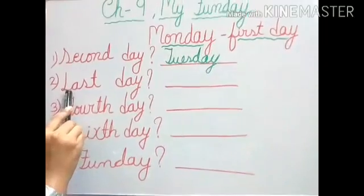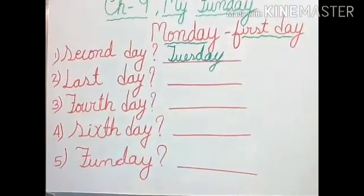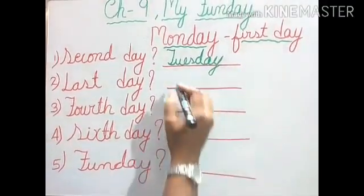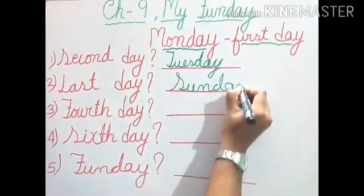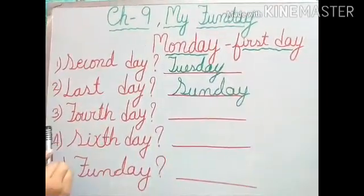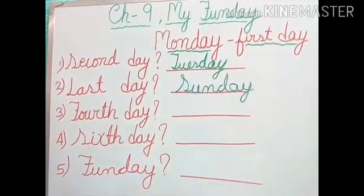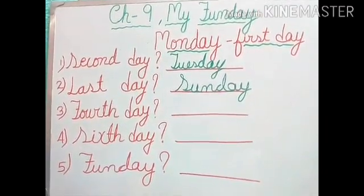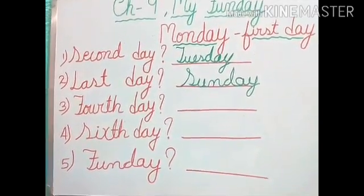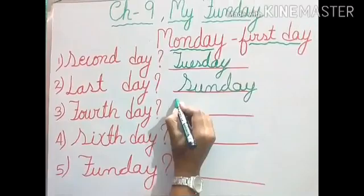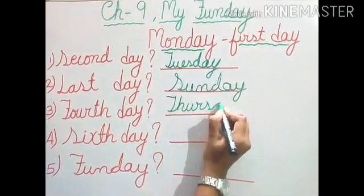Now number two: what is the last day of the week? If we start from Monday, then the last day of the week — yes, very good — the last day of the week is Sunday. Then number three question: what is the fourth day of the week? Yes, it is Thursday.